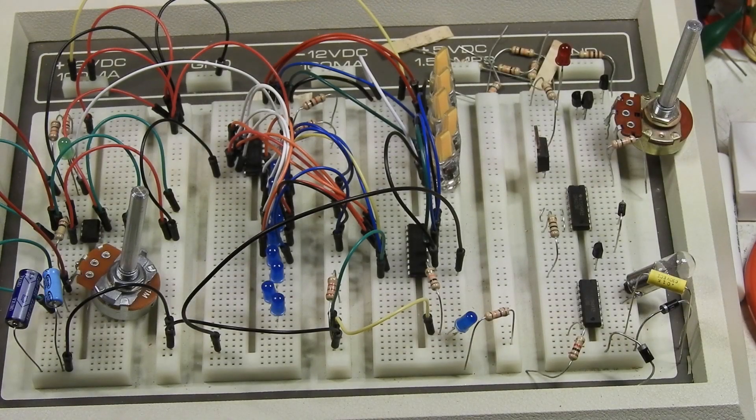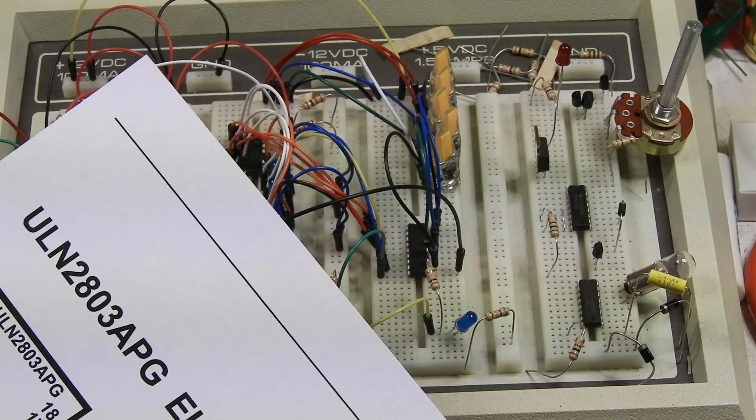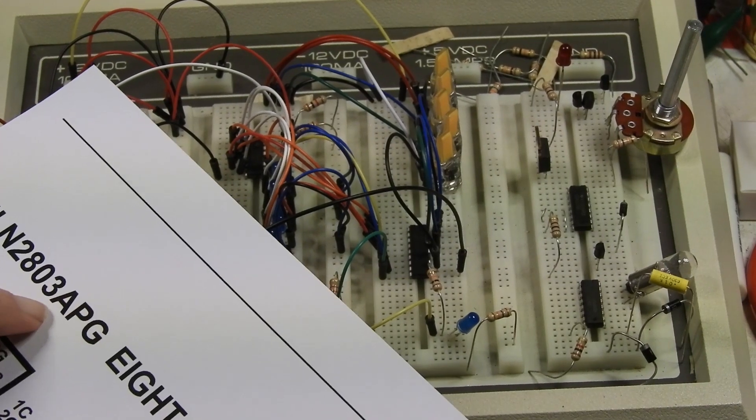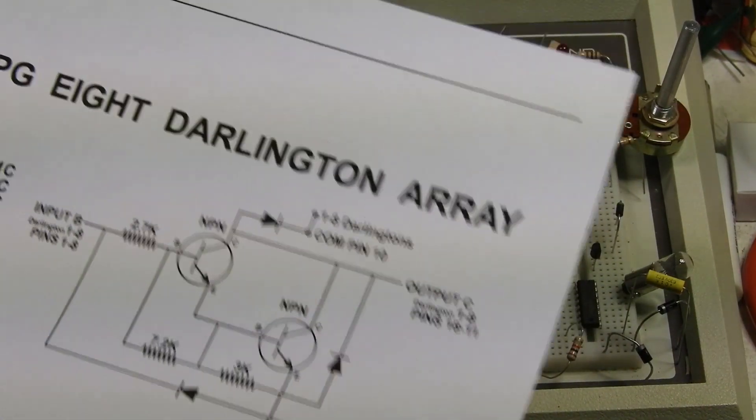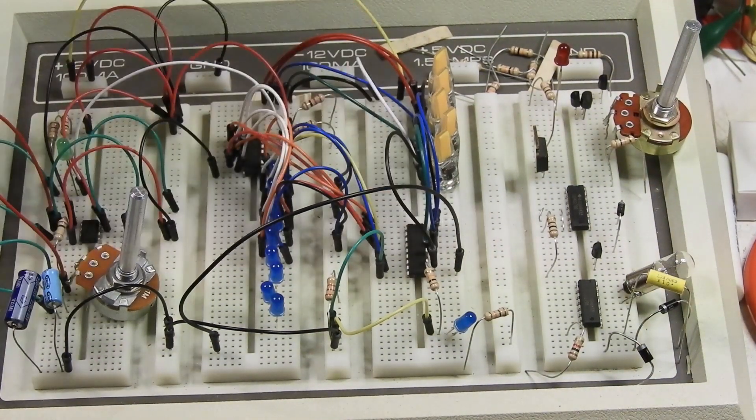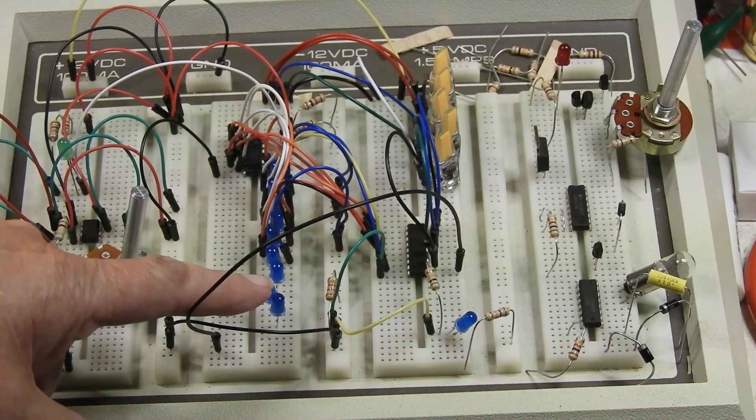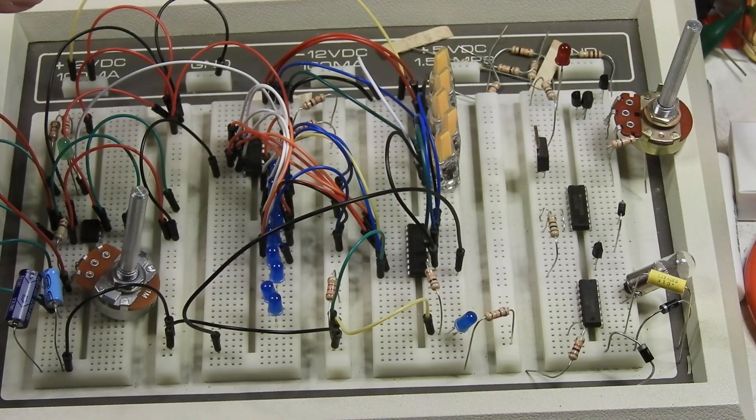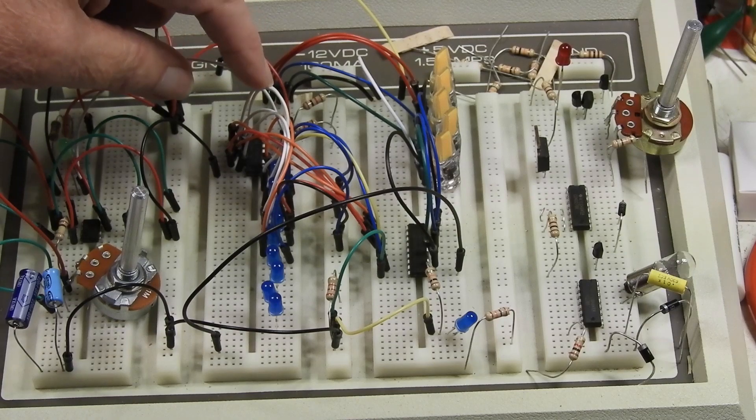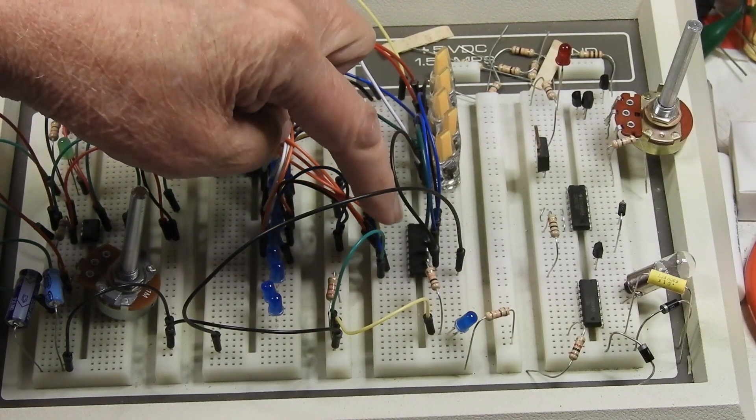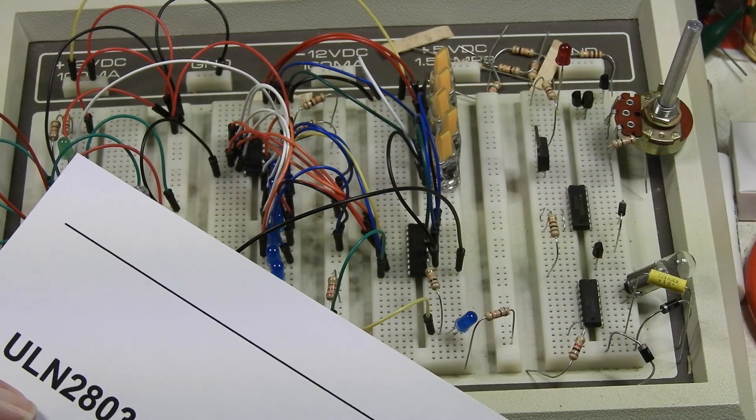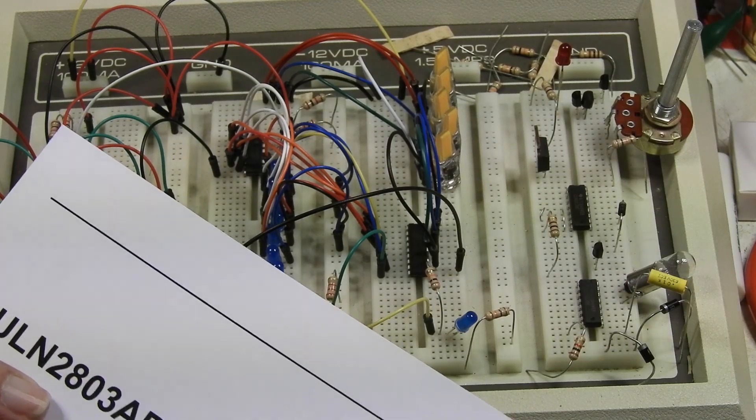I'm going to show you where this ULN2803APG chip is, and as you can see, it's an 8 Darlington array. That is right here. Now I've taken the last five LEDs off, and I've wired directly from the 4017 decade counter over to this chip over here, the ULN2803APG.